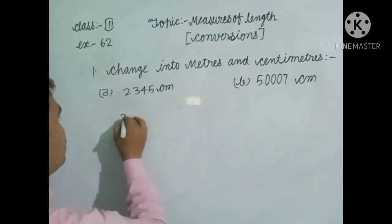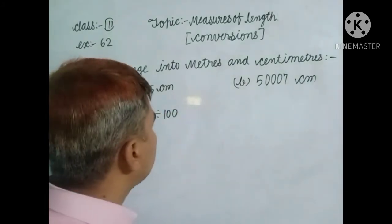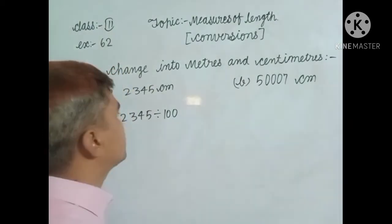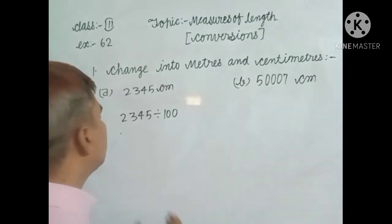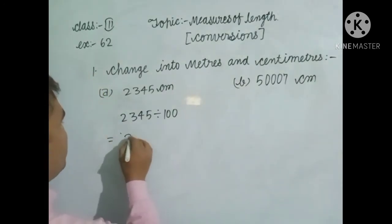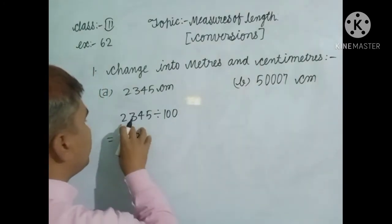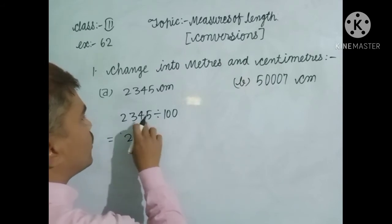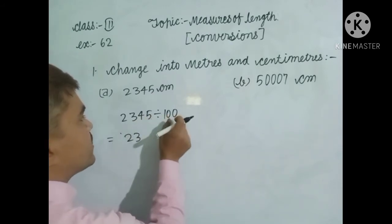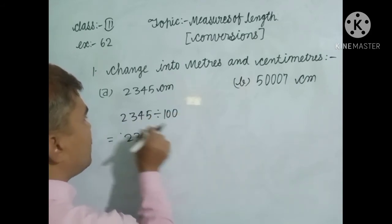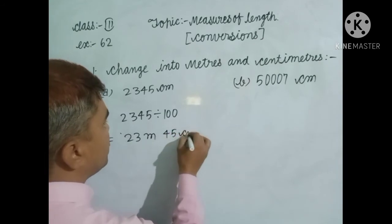As shown in the previous video, take 2345 and divide by 100. Using the short method for dividing by 100: the last two digits from the right side become the remainder, and the rest is the quotient. So 45 is the remainder and 23 is the quotient. The quotient is meters and the remainder is centimeters.